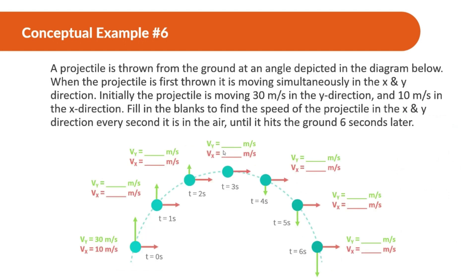A projectile is thrown from the ground at an angle shown in the diagram. This projectile is moving in the Y direction initially at 30 meters per second and in the X direction at 10 meters per second.